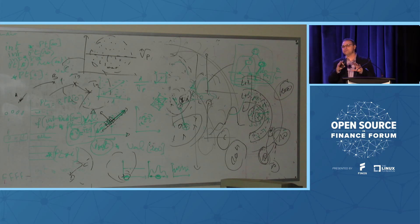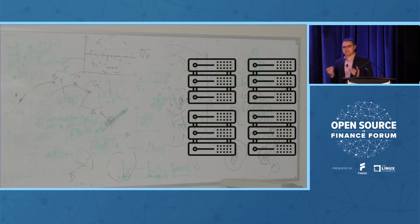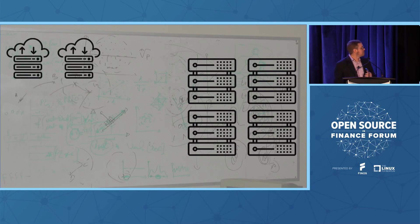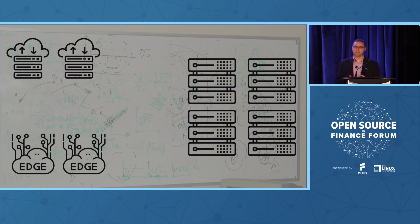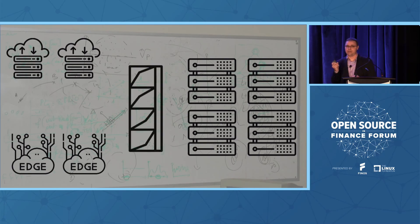If we look at some of the key computing architecture pieces, you have distributed units, you have maybe a server farm internally with a whole bunch of server racks, you probably have some cloud infrastructure that you're already working with, perhaps you're into the edge space and have some edge nodes out there as well. And being in the financial services industry, I could almost guarantee you've got a mainframe in there as part of that.